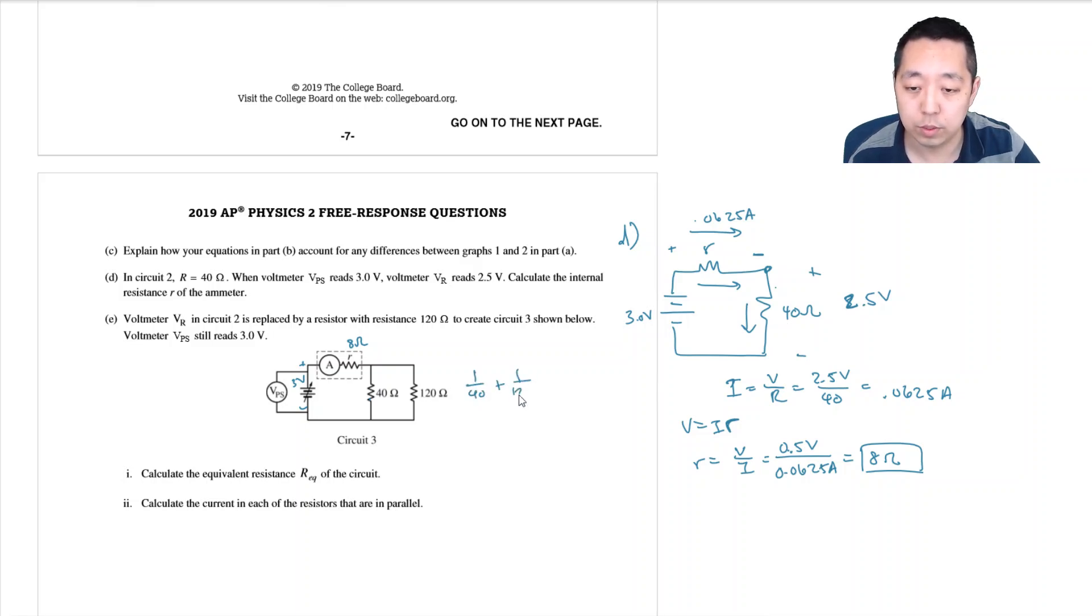These two resistances are in parallel so the parallel equation you can do 1 over 40 plus 1 over 120 is equal to 1 over r to make these two collapse into a single resistor. So 1 divided by 40 plus 1 divided by 120 is going to be, this is like 3 over, it'd be like 4 over 120 is equal to 1 over r, and so r would equal 120 over 4 which is 30. So this would be 30 and then these, the 30 is in series with the 8 so I do 30 plus 8 so I get 38 ohms here.